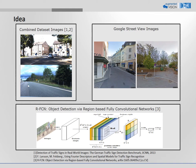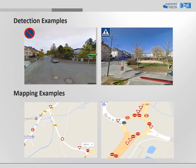Using the network, we can recognize traffic signs in a street view image. In these detection examples, you can see the detected traffic signs in two street view images.